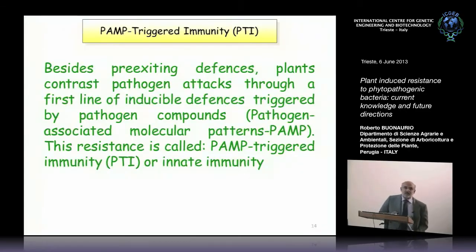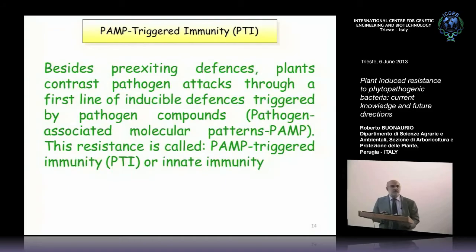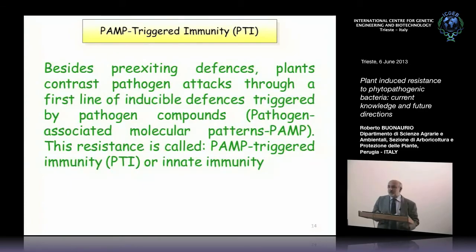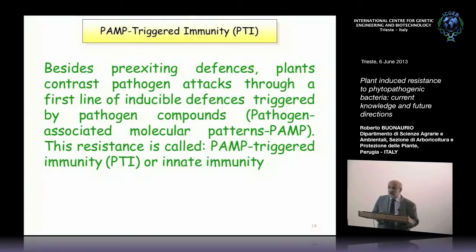Regarding plant immunity, we can say that beside pre-existing defenses — for example, plants can resist because they have more waxes on the surface, rendering them more resistant, or they have fewer stomata through which many pathogens enter — this is a pre-existing defense.